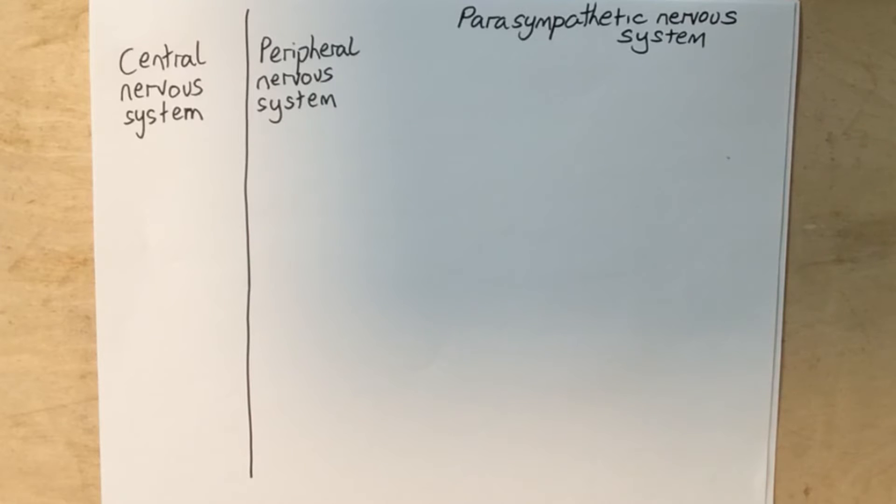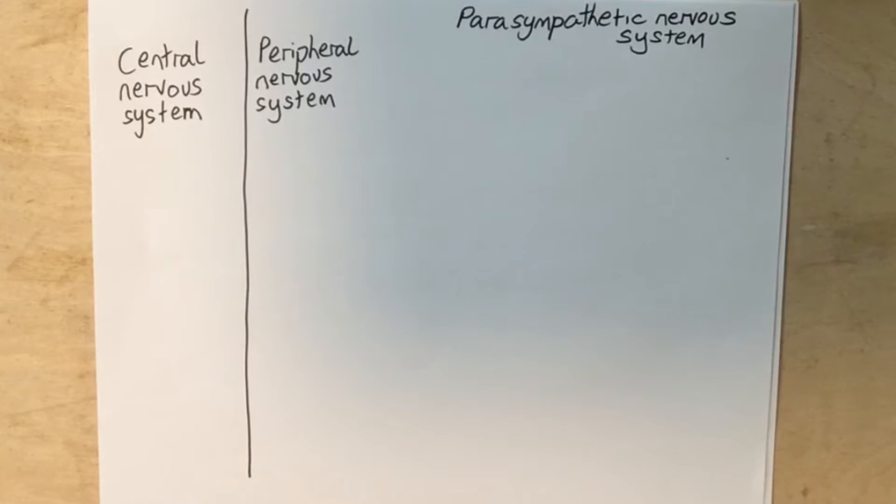What I'm going to talk about in this video is the organization of the parasympathetic nervous system. Of course, this is a branch of the autonomic nervous system. And then we'll also look at the neurotransmitters and receptors used.